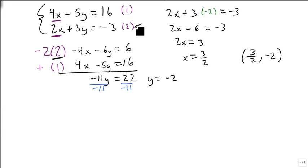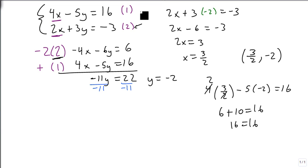And I know that it works for equation 2, so the only question I have is, does this work for equation 1? Let's plug it in. 4 times 3 halves minus 5 times a minus 2 equals 16. The 4 and the 2 divide out and leave a 2, and 2 times 3 is 6. Negative times a negative is a positive. 10, 16 equals 16. And sure enough, it also works for the first equation. Since it works for both equations, it is our solution.